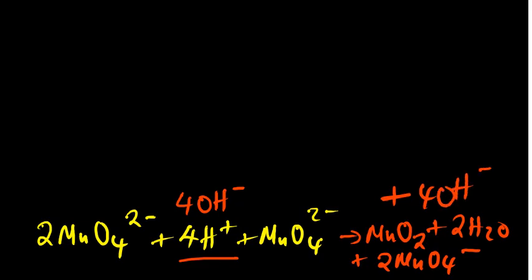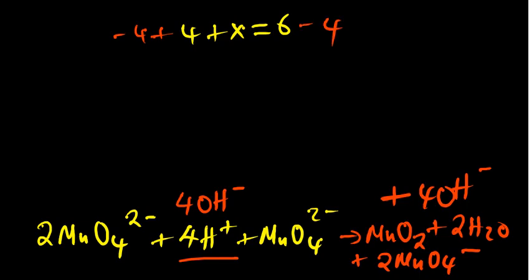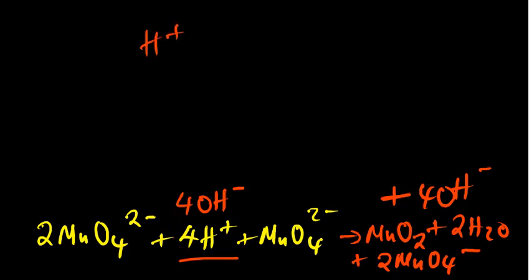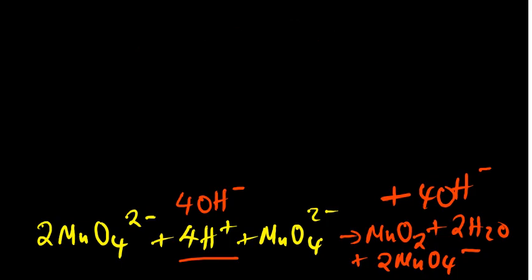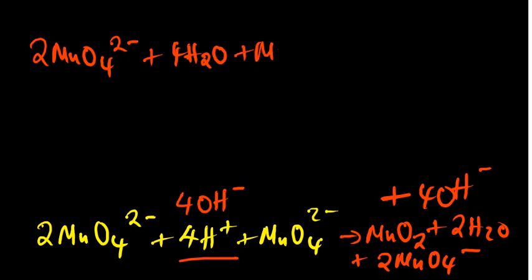We have 4 hydrogen ions, so we add 4 hydroxide ions to both sides of the equation. Adding an equivalent amount of a substance to both sides does not change the reaction — it's like subtracting the same value from both sides of an algebraic equation. A reaction between a proton and a hydroxide ion gives us water, so on the left-hand side: 2MnO4 2- + 4H2O + MnO4 2-. On the product side, we add the 2 water molecules plus 4 hydroxide ions.